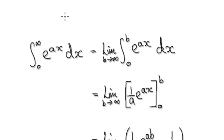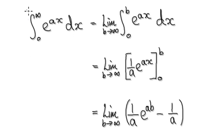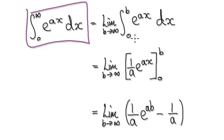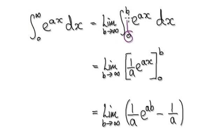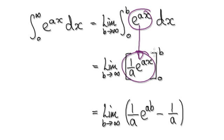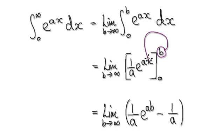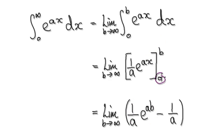So our normal routine — ultimately we want to find this. Our routine has always been to integrate from 0 to an arbitrary point b, and then allow b to head towards infinity. So we evaluate it from 0 to b and then later allow b to head towards infinity. Integrating this will give you this; put this into here, that gives you this.